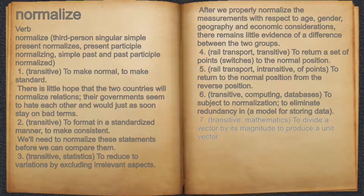7. Transitive, mathematics: to divide a vector by its magnitude to produce a unit vector.